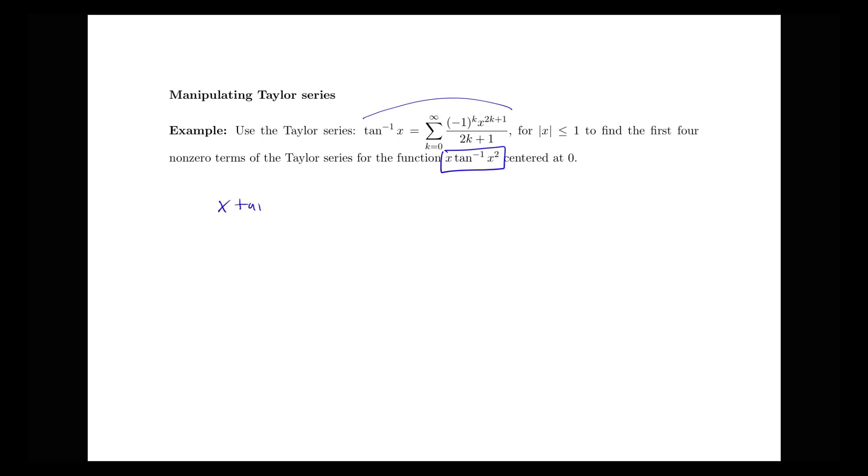So I have x times tan inverse of x squared is equal to x times the sum from k equals 0 to infinity negative 1 to the k. And now I know that tan inverse of x was equal to this series here. I'm going to replace x with x squared. So we have x squared to the 2k plus 1 all over 2k plus 1.